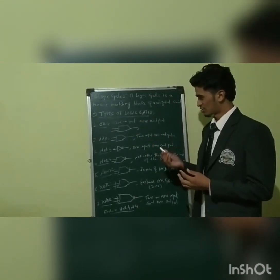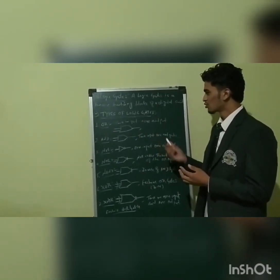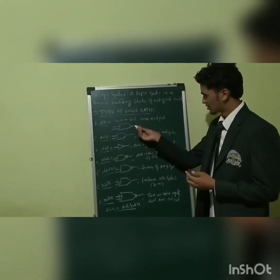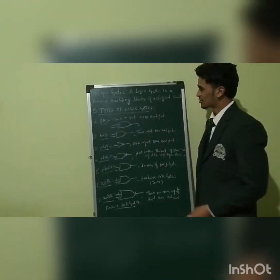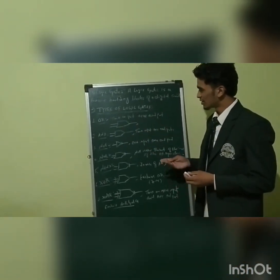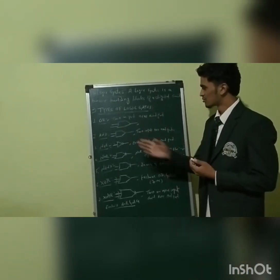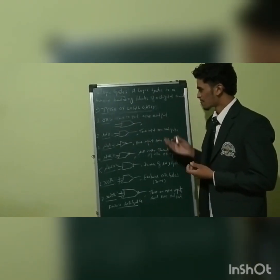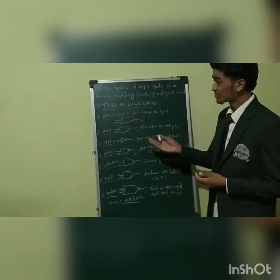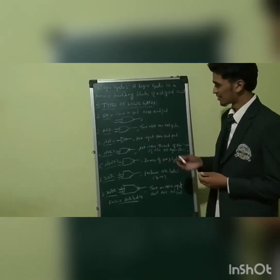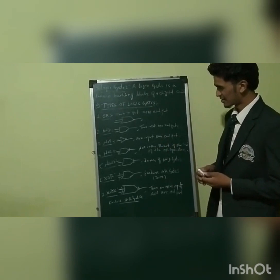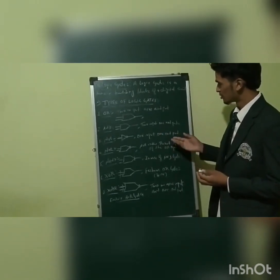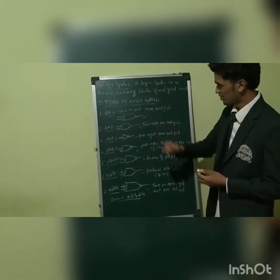Number one is the OR gate. The OR gate has its symbol and takes two inputs and one output. Number two is the AND gate, which also has two inputs and one output.